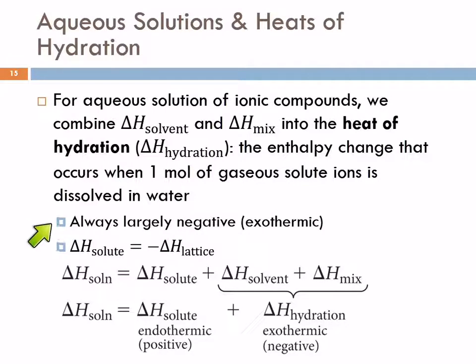However, this is always going to be largely negative, it's going to be exothermic. And the change in enthalpy for the solute, separating those ions, is the same magnitude as the lattice energy for that ionic solid. But the sign is different because we're pulling apart instead of putting together.